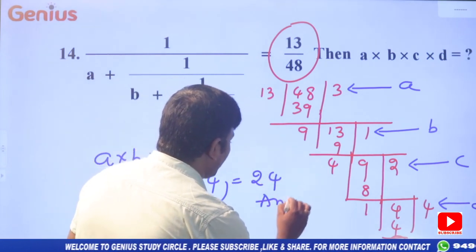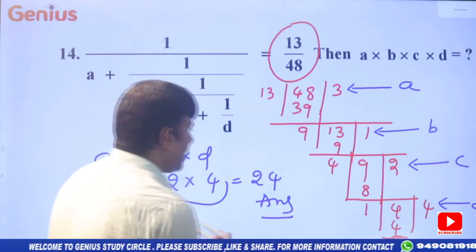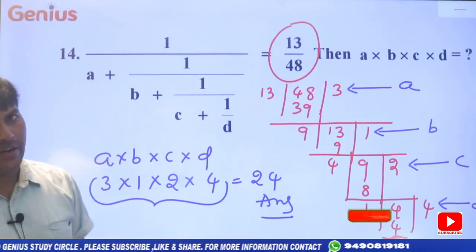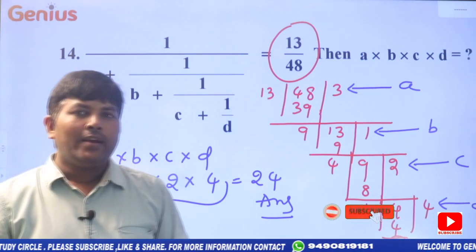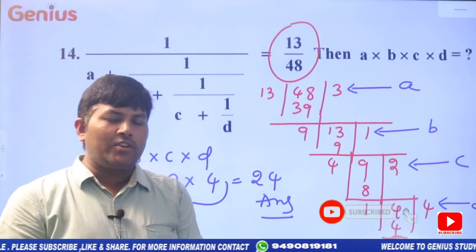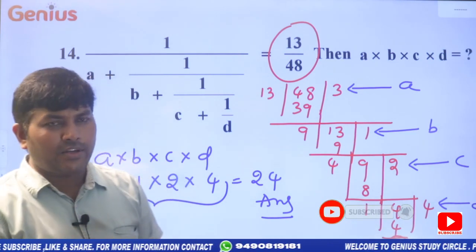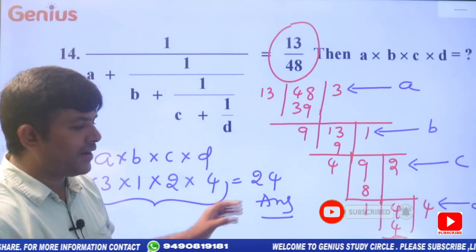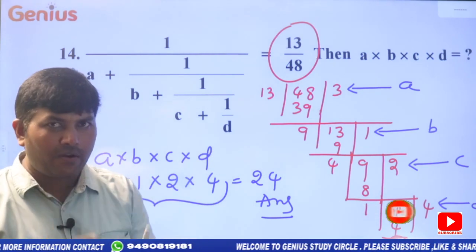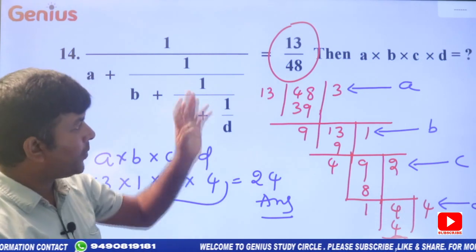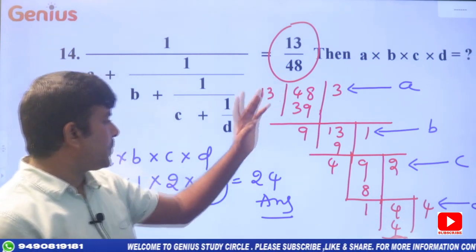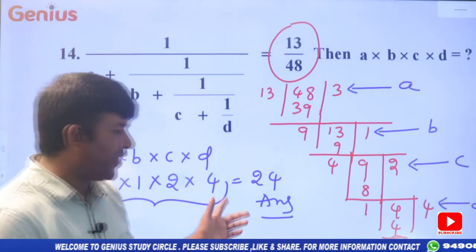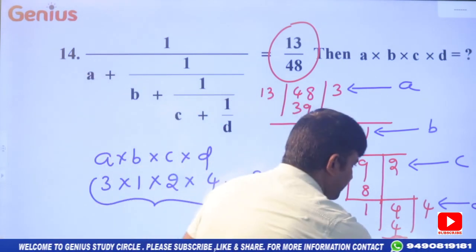We found the ABCD values and can calculate their sum or product. In this problem, only the product is asked, so the answer is 24.